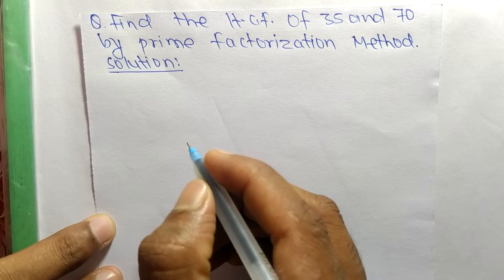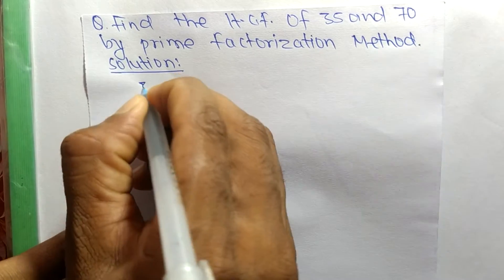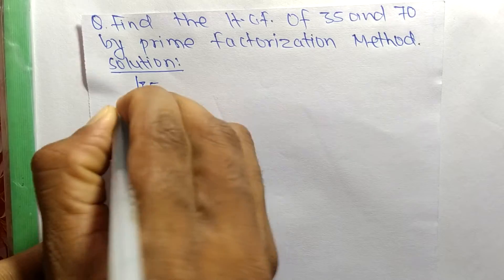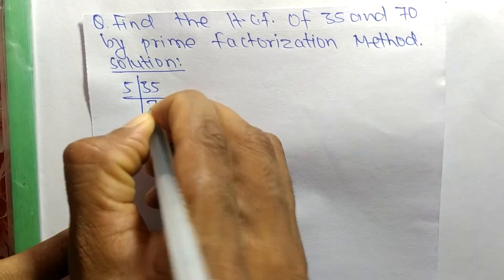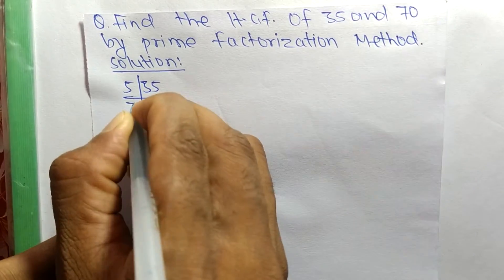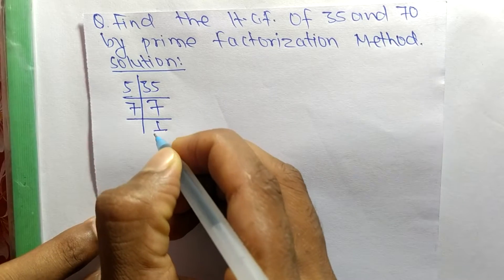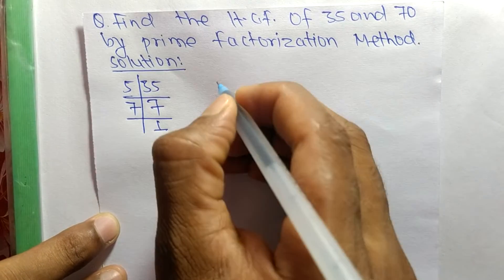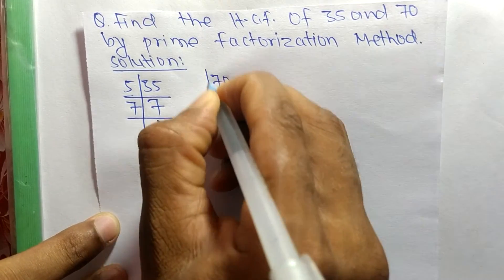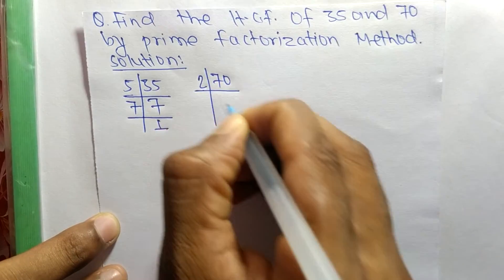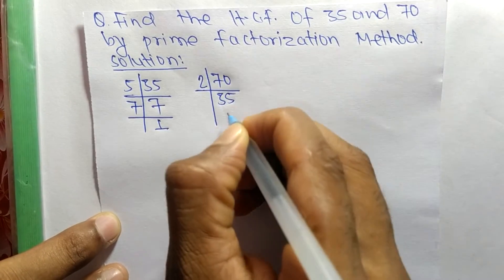First we find out the prime factors of 35, so it is 5 times 7 equals 35, and 7 times 1 equals 7. The prime factors of 70 are 2 times 35 equals 70.